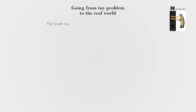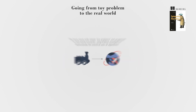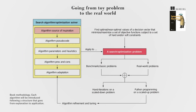The book starts with simple toy problems and progresses to real-world scenarios, using Python examples to demonstrate the practical uses of algorithms. It covers the source of inspiration, pseudocode, parameters, and solution strategies for each algorithm, discussing their strengths and weaknesses, and adaptation strategies.